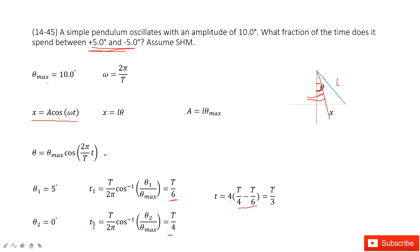From 5 degrees to 0, 0 to negative 5, negative 5 to 0, 0 to 5. Just 4 times of this period or of this time duration. And then we can find the answer there. Thank you.